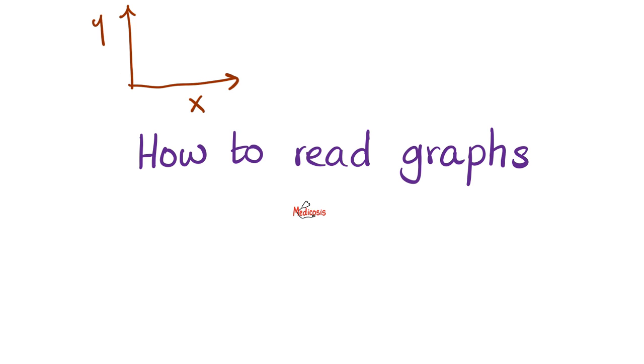If the graph looks something beautiful like this, going up, this is directly correlated, which means as x goes up, y goes up. But what if the graph is drawn in a different way?